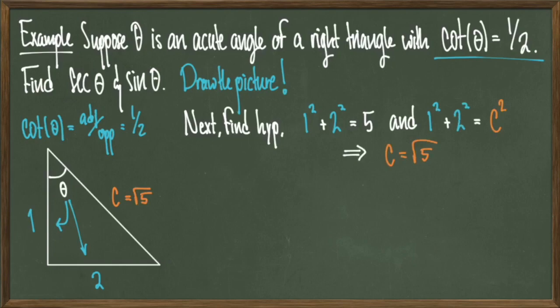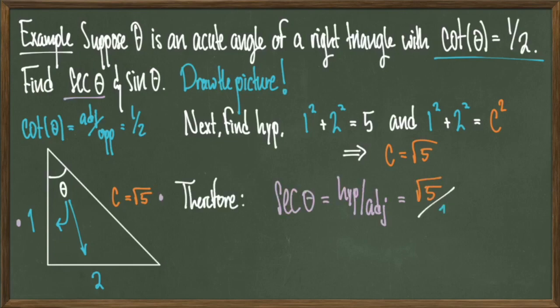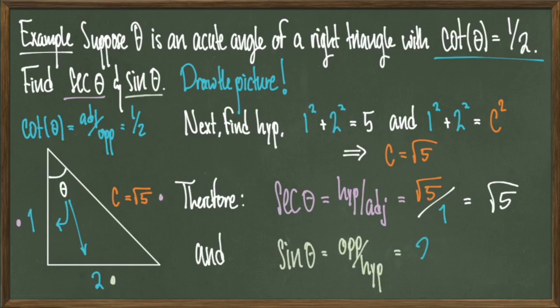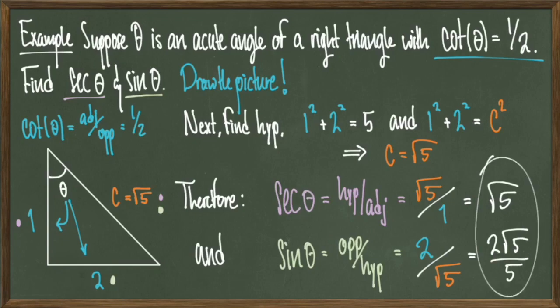Now that I have all the sides of this triangle, I can find the needed trig ratios of secant and sine. I find that secant of theta is equal to hypotenuse over adjacent, which is root 5 over 1, which simplifies to root 5. And sine of theta is equal to opposite over hypotenuse, which is equal to 2 over root 5, which simplifies to 2 times root 5 over 5 after I rationalized the denominator.